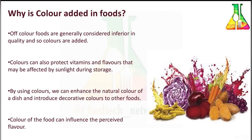Why is food color added? Off-color foods are generally considered inferior in quality and are not as attractive. Colors also protect vitamins and flavors that might be affected by sunlight, providing protection against sunlight and UV rays. Colors help in preservation of food and allow it to be stored for a long time. Using colors we can enhance the natural color of a dish and introduce decorative colors, and the colors of food can influence perceived flavor.